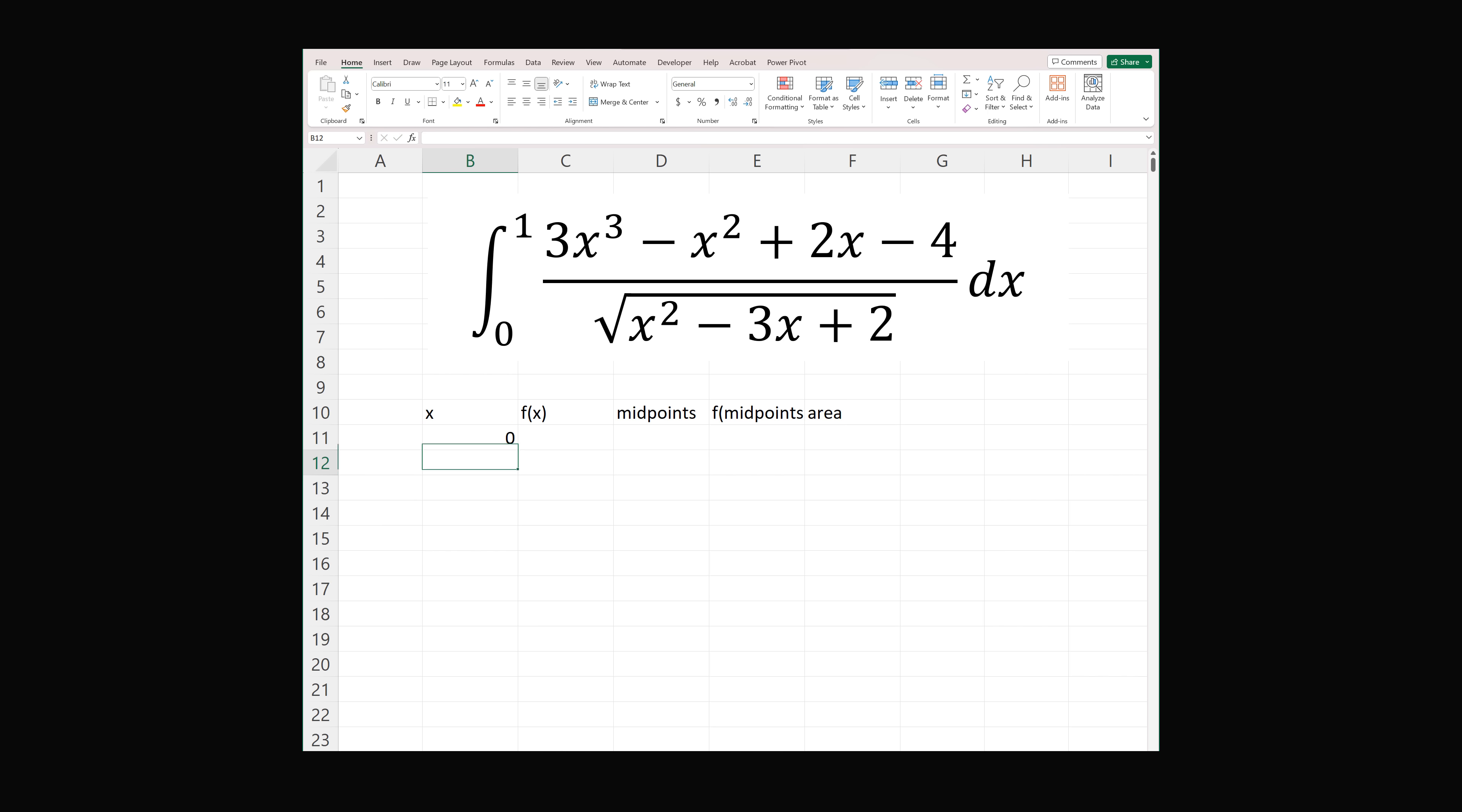We start out where x is equal to 0. Then we want some number of rectangles. Let's say we just start out with 100. So we'll take the previous value plus 1 divided by 100, which is 0.01. Now we want the function at each of these points. So we need a fraction where we have 3 times x cubed minus x squared plus 2 times x minus 4, and we need this divided by the square root of x squared minus 3 times x plus 2. So here we go. That's the function evaluated at 0.